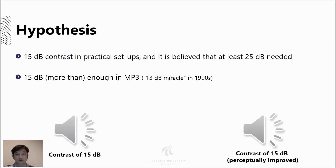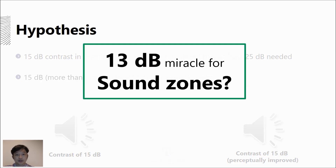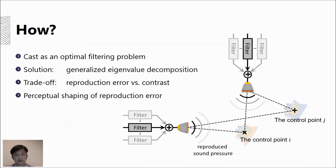So the question is: is there a 13 dB miracle for sound zones? Yes — then how do you do this? First, we have to design filters for each loudspeaker per audio input. We have realized that it can be done by using techniques from speech enhancement called optimal filtering.